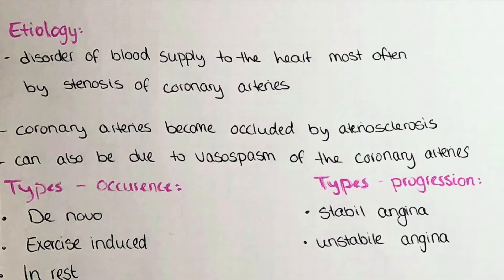First I want to discuss the etiology and different types of the disorder. Angina pectoris occurs when the heart does not receive enough blood supplied by the coronary arteries. This is most often due to an occlusion of those coronary arteries, which is mostly caused by arteriosclerosis.